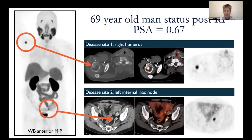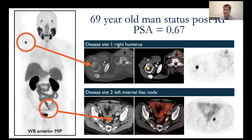With the advent of PSMA PET, we have many stories like this patient — a 69-year-old man who had a radical prostatectomy with a PSA after surgery of 0.7. We can now very easily and accurately see both osseous disease and soft tissue disease. PSMA PET has now replaced the combination of CT and bone scan that used to be used. Not only did it eliminate two studies and turn it into one, it is more accurate, faster, and easier to interpret.